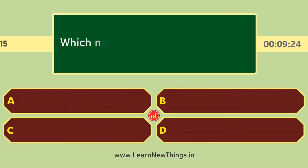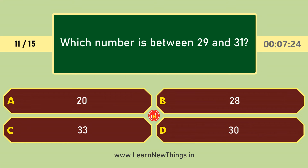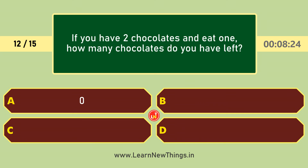Which number is between 29 and 31? 30. If you have 2 chocolates and eat 1, how many chocolates do you have left? 1.